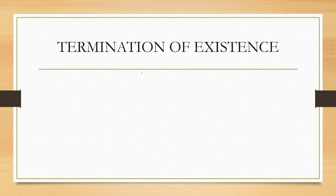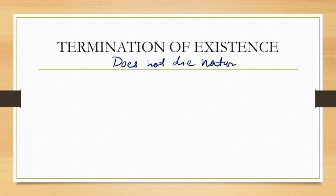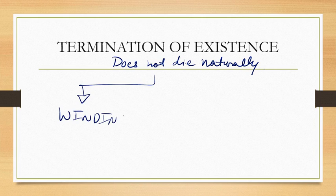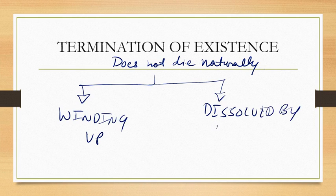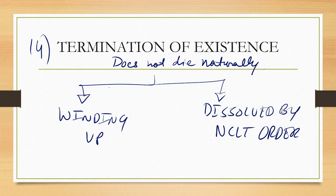The fourteenth and last feature is termination of existence. A company does not die naturally — it has to be wound up. The company can be terminated by winding up and must be finally dissolved by a court order or NCLT order. These are the features of a company and you must know them to understand company law properly.